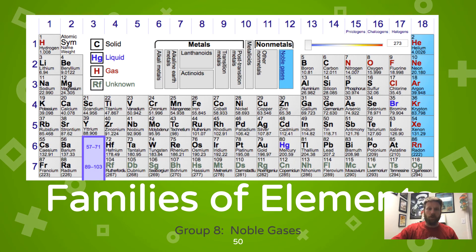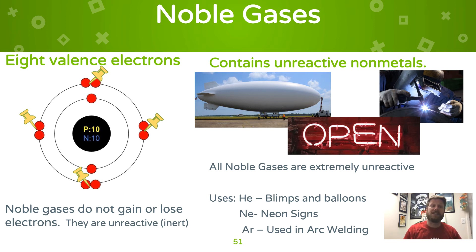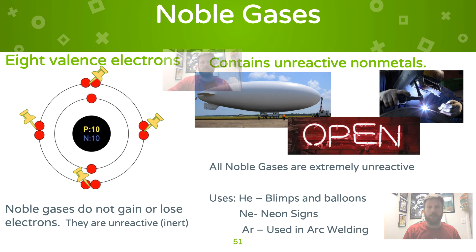Group 18 is the noble gases. The name refers to nobility — noblemen do not interact with common folk, and noble gases are extremely unreactive. They don't react or interact with other elements, hence the name. These elements have eight valence electrons. Even though they are extremely unreactive, we do have uses for them: we fill blimps and balloons with helium, red neon signs have neon gas in them, and argon is used by welders as an envelope around reacting gases in an arc weld, preventing atmospheric oxygen from interfering with the weld.